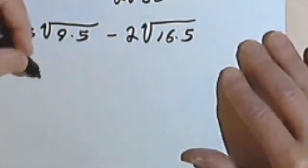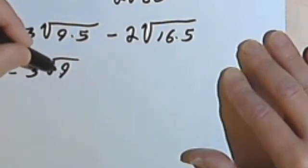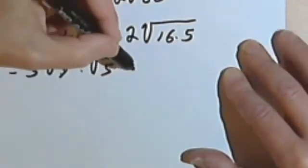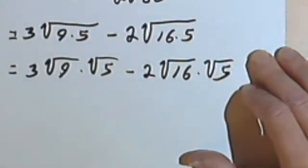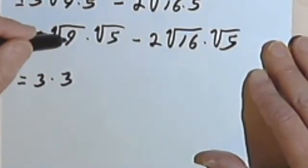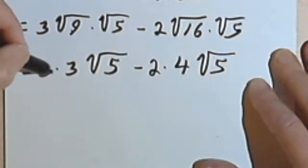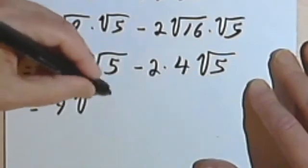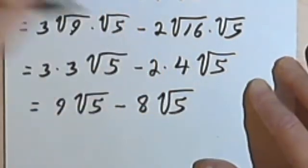Once again using the product rule, I'll break these down into separate radicals: 3 times the square root of 9 times the square root of 5, minus 2 times the square root of 16 times the square root of 5. Now I'll take my square roots. So I'm going to have 3 times 3 — the square root of 9 — times the square root of 5. The square root of 16 gives me a 4, times the square root of 5. Multiplying out my coefficients: 3 times 3 is 9 times the square root of 5, minus 2 times 4 is 8 times the square root of 5.